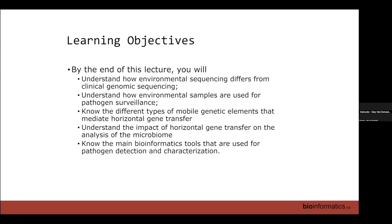Here are our learning objectives. By the end of this lecture, hopefully you will: understand how environmental sequencing differs from clinical genomic sequencing; understand how environmental samples are used for pathogen surveillance; know the different types of mobile genetic elements that mediate horizontal gene transfer and lateral gene transfer; understand the impact of horizontal gene transfer on the analysis of the microbiome and on regular clinical genomes; and know the main bioinformatics tools used for pathogen detection and characterization.